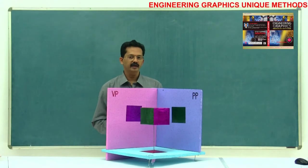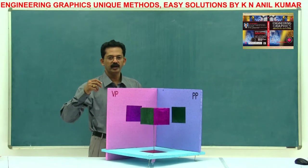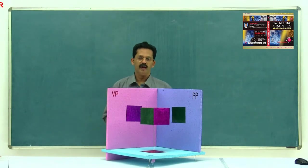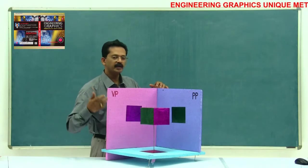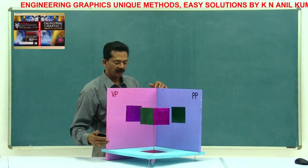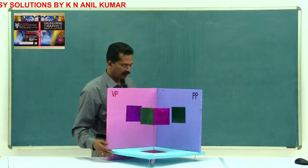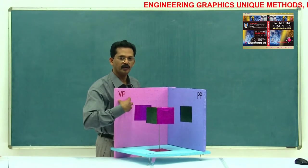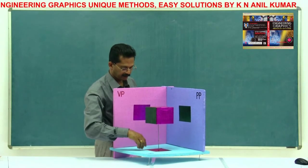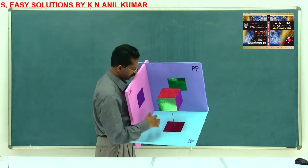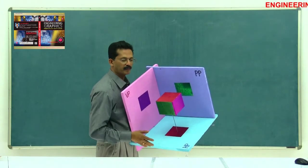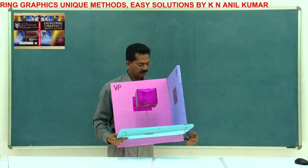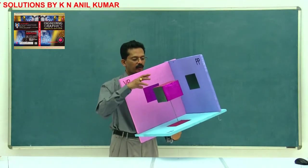In multi-view projections, as the name indicates, a number of projections or views at different angles are obtained on different planes — preferably front view, top view, and side view. Here we consider three planes: the vertical plane, the horizontal plane, and the profile plane. The front view is obtained on the vertical plane, the top view on the horizontal plane, and the side view on the profile plane.